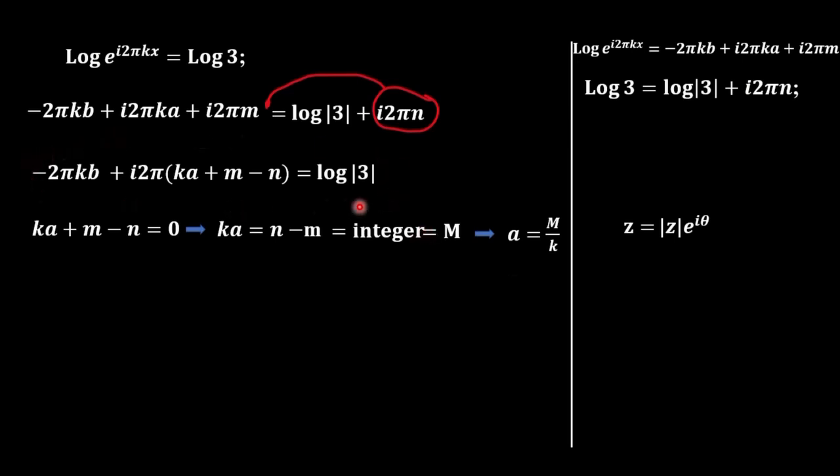Next step is to find b from this equation with this term equal to 0. So, we have what remains. We divide over negative 2πk. And we have this answer. k not equal to 0.